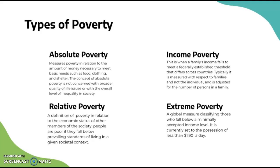Then we have income poverty. This is when a family's income fails to meet a federally established threshold that differs across countries. Typically, it is measured with respect to families and not the individual, and is adjusted for the number of persons in a family.